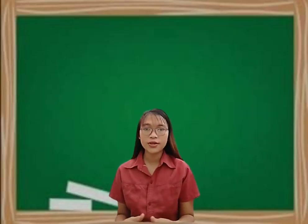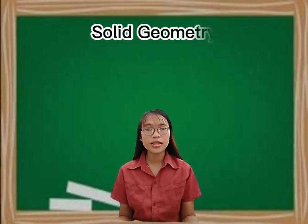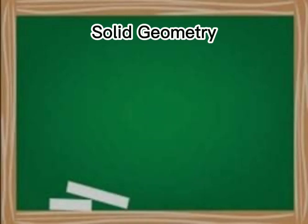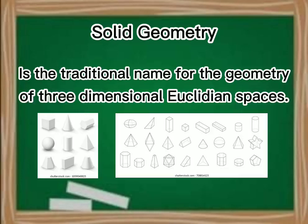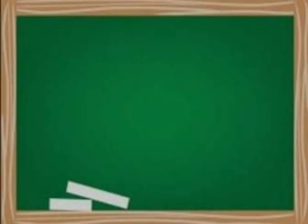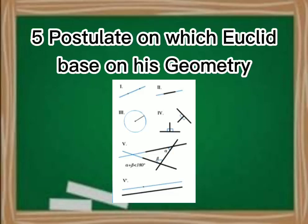And for volumes 11 to 13, it is all about solid geometry. Solid geometry is the traditional name for the geometry of three-dimensional Euclidean spaces. And there are five postulates on which Euclid based his geometry.